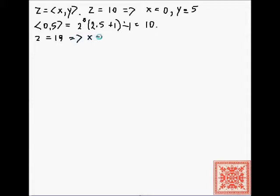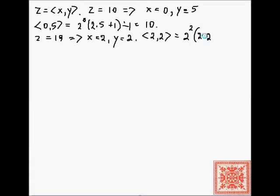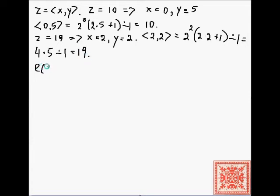Here's another quick example: if z equals 19, then x equals 2 and y equals 2, because the pair of (2, 2) equals 2 to the second times (2×2 + 1) minus 1, which is 4 times 5 minus 1, and that equals 19.